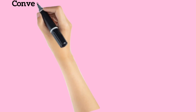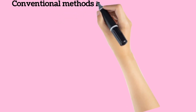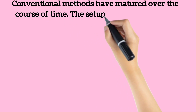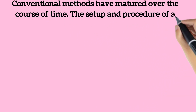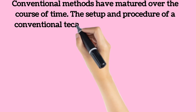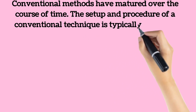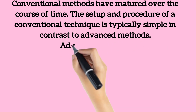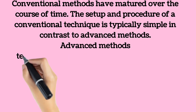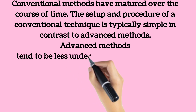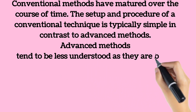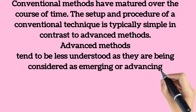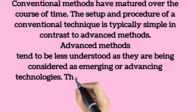Conventional methods are techniques that have matured over the course of decades, and in this time have become well documented in codes, standards, and best practices. The setup and procedure of a conventional technique is typically simpler in comparison to advanced methods. Advanced methods tend to be less understood as they progress as emerging technologies — with uncertain advantages or limitations, lack of technician qualification criteria, or little to no industry codification.